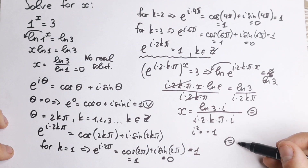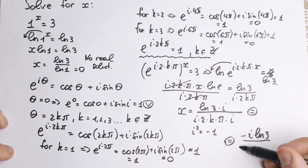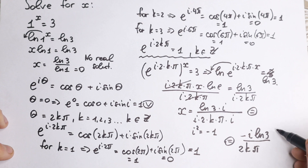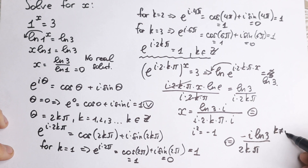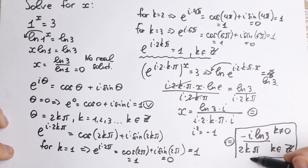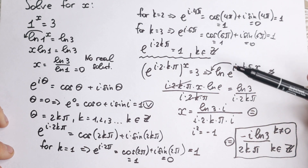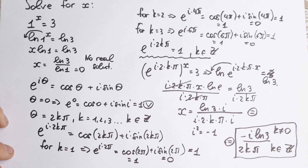Our final answer is x equal to minus i times natural log 3 over 2k pi. An important note: k cannot equal zero, and k must be a whole number — k is in the integers. This is not a general solution for all k, because when k equals zero the identity doesn't hold, and when k is not an integer — for example k equal to 1.5 — this identity doesn't work either. So it's a tricky problem with a tricky answer.